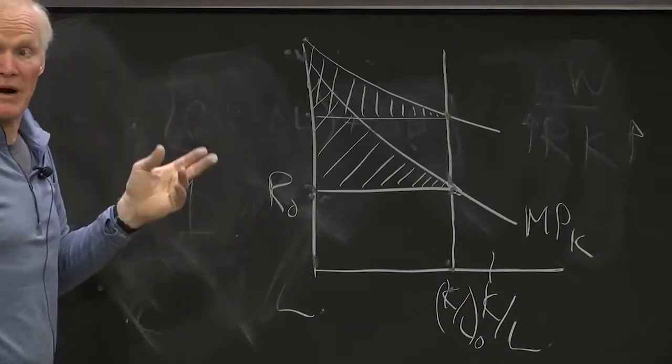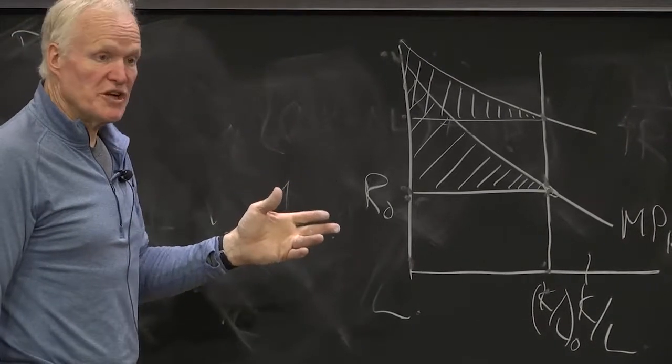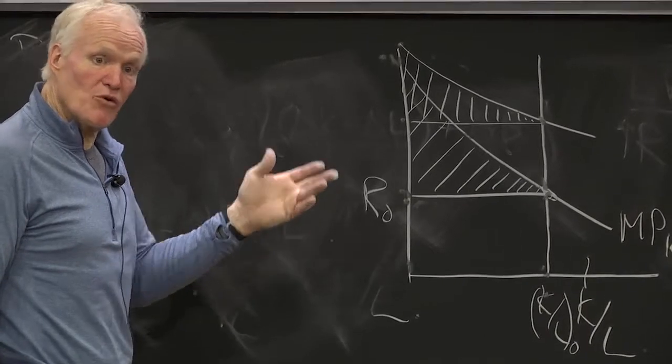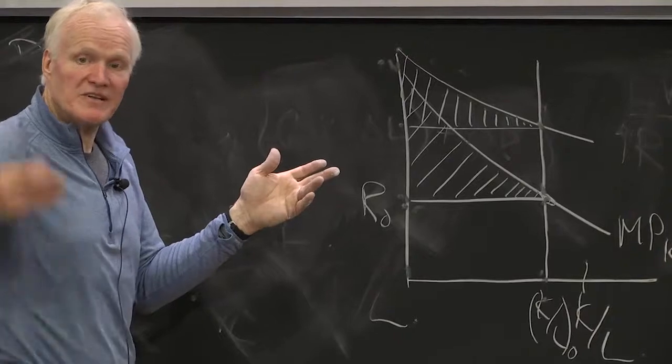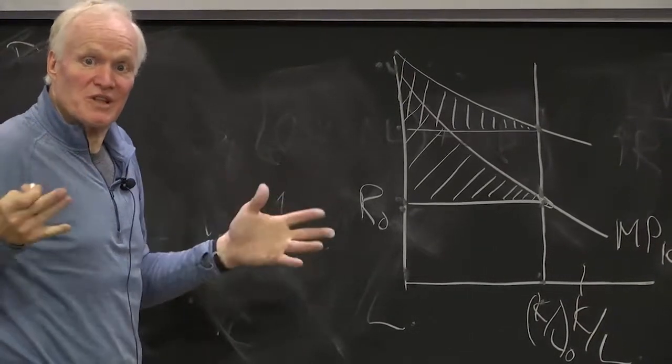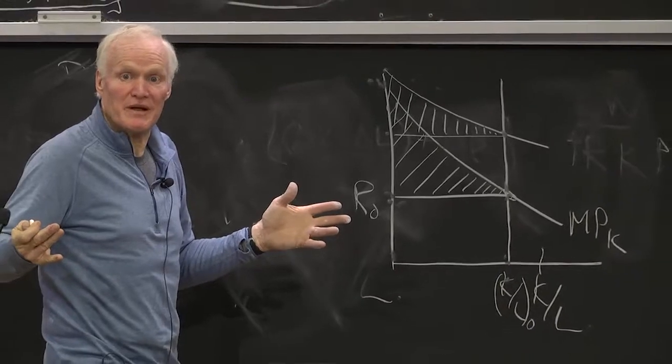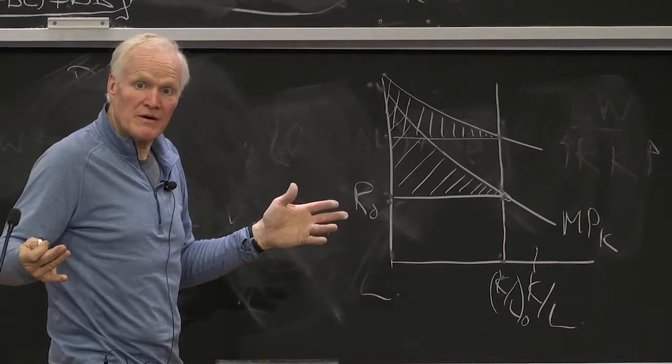Workers are worse off because this triangle here is smaller than that triangle. So we had extremely biased technological progress in this case. Technology improved, but it improved in such a way it was so biased for capital. This is kind of the example you had in mind before, which is there's less demand for workers than they used to be. Given the amount of workers, they get paid less rather than more.